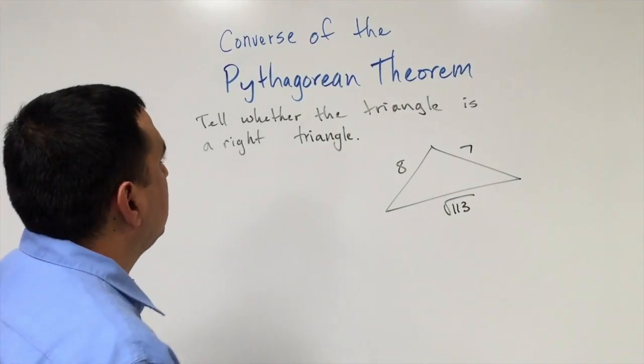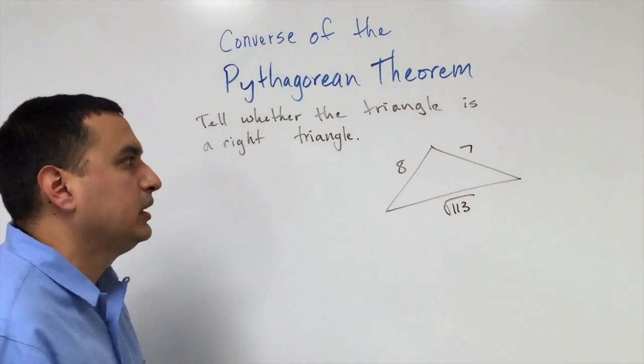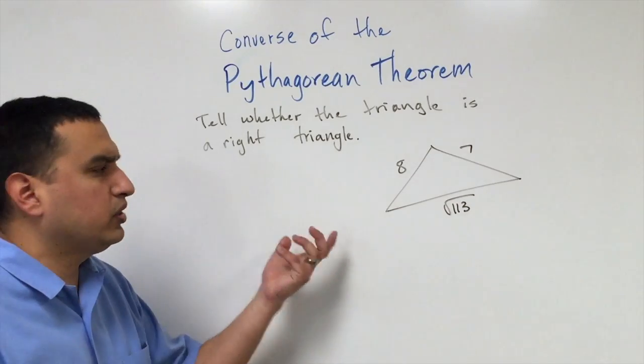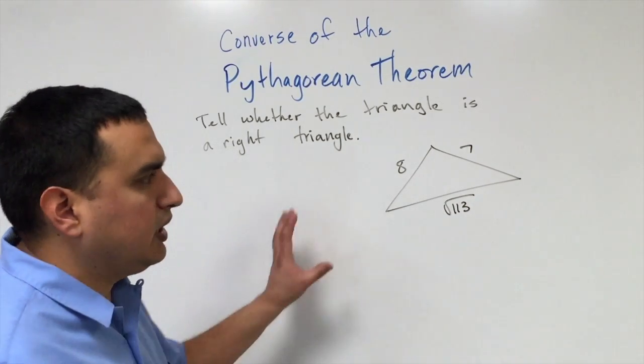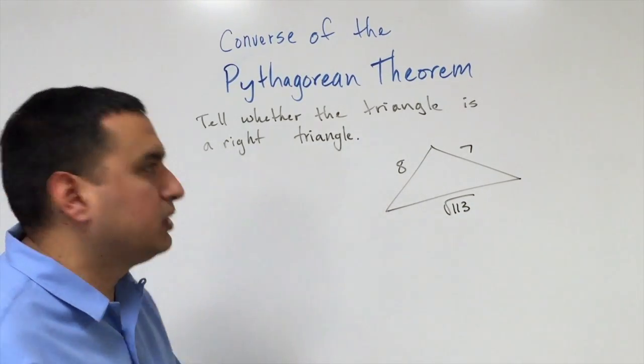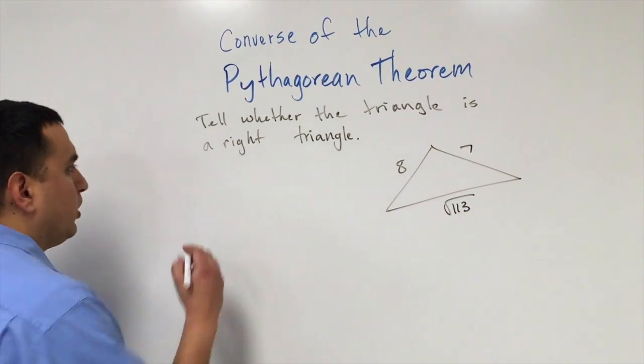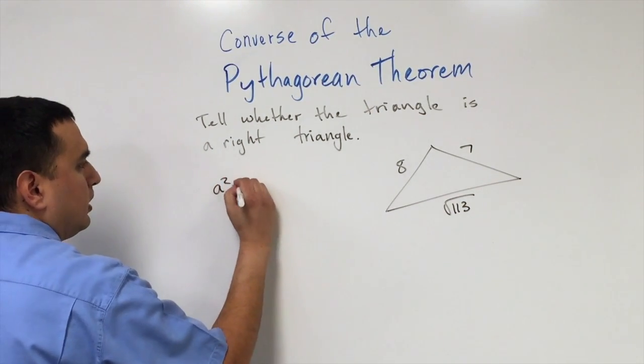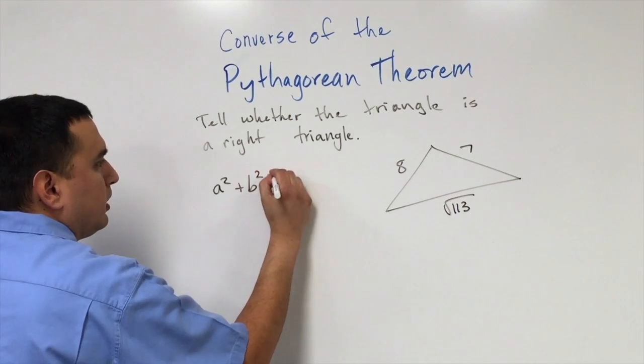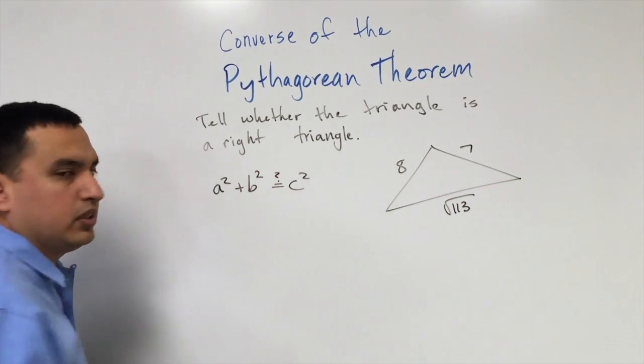Next, I'm going to show you what's called the converse of the Pythagorean theorem. That's simply us using the Pythagorean theorem to decide if a given triangle is a right triangle. So basically you're asking yourself, is a squared plus b squared, does that actually equal c squared?